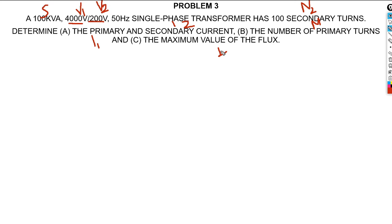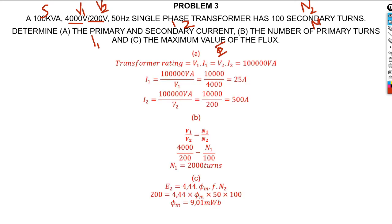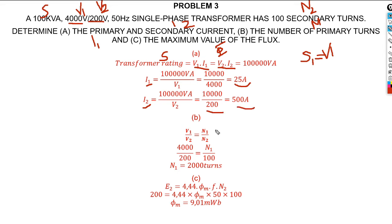We've already discussed how to use the turns ratio. From the transformer rating, S equals V1 times I1, which also equals V2 times I2. To find I1, take the rated power divided by V1 — that gives the primary current. For the secondary current, use the same rated power divided by V2. The kVA rating applies equally to both primary and secondary sides.